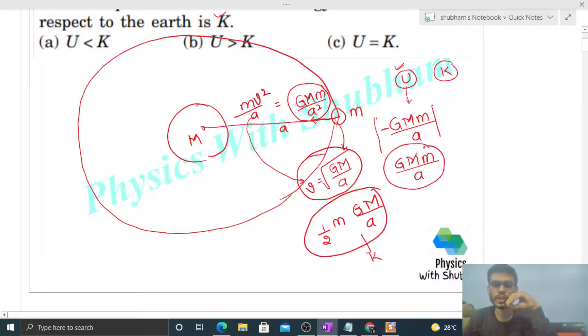Now you can see that the magnitude of potential energy is twice the kinetic energy. So you can say that potential energy will be greater than kinetic energy. Actually, this is the magnitude of potential energy which is greater than kinetic energy. Otherwise, the potential energy is negative and kinetic energy is positive, so in that case kinetic energy would be greater. But for magnitude, the potential energy magnitude is twice the kinetic energy.